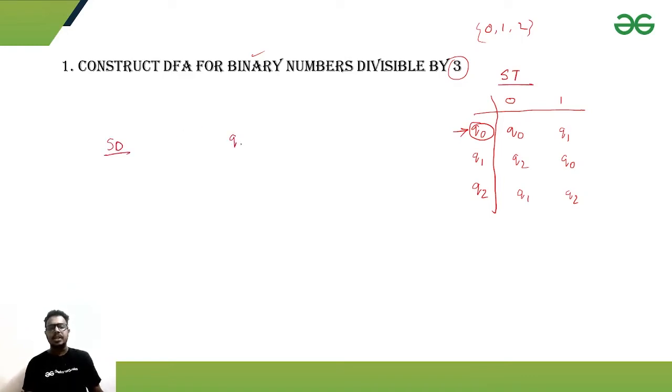What is the state diagram? State diagram is: q0 is our initial state as well as our final state itself. By getting zero we will be in the same state, and if we are getting one, then we will be going to q1.